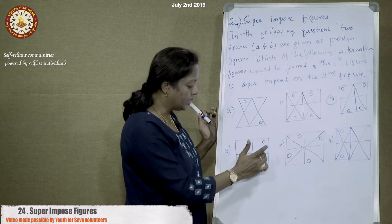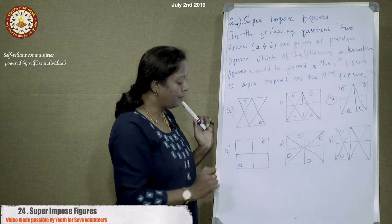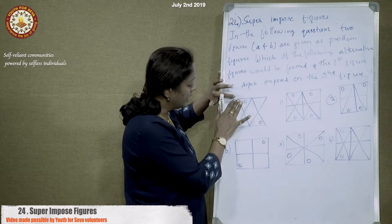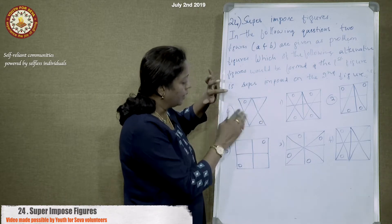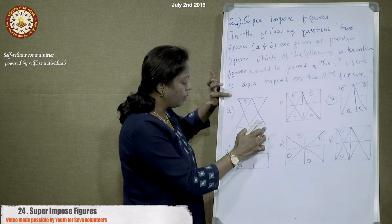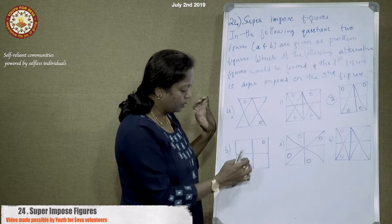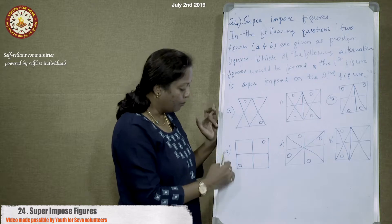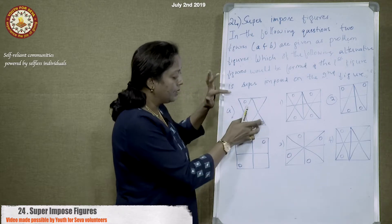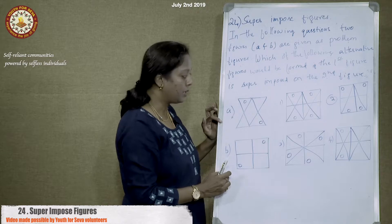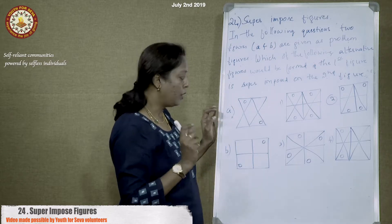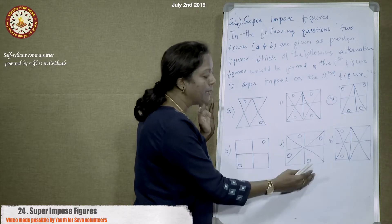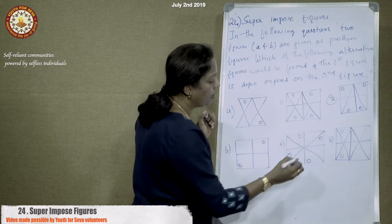The circles are at the top and bottom corners in one figure, and towards the rightmost and bottom-left corners in the other. Since the circles are not overlapping, the resulting picture would have four circles. With this, we can outright eliminate any option that shows only two circles.